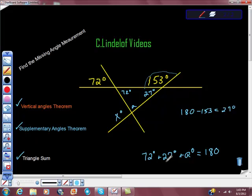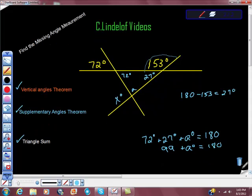I'm going to add these two together, and I'm going to get 99, so 99 plus A degrees equals 180 degrees. I'm going to just move this down just a little bit here. Subtract 99 from both sides, and we get that A degrees is equal to 81 degrees.